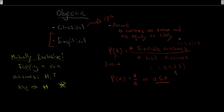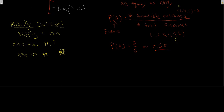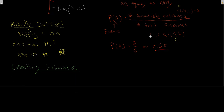Collectively exhaustive means that all of our outcomes together have exhausted all possible outcomes — we haven't missed anything. All possible outcomes have been accounted for and listed. Collectively exhaustive means everything that could happen has been considered.